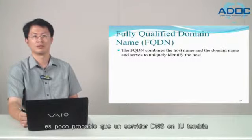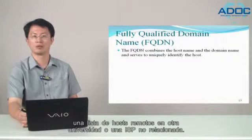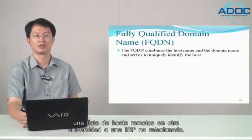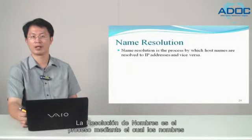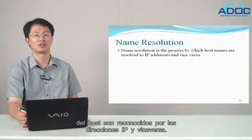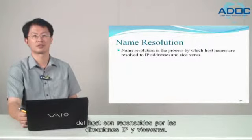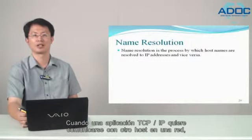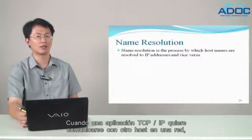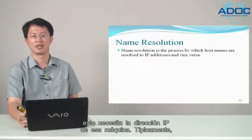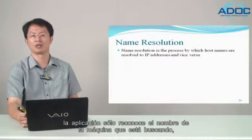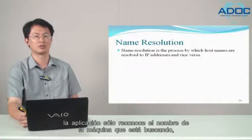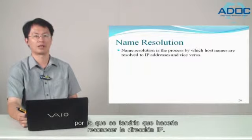For example, it is unlikely that a DNS server at one university would have a listing for remote hosts at another university or an unrelated ISP. Name resolution is the process by which host names are resolved to an IP address and vice versa. When a TCP/IP application wants to communicate with another host on the network, it needs the IP address of that host. Typically, the application knows only the name of the host it is looking for, so it has to resolve the name to an IP address.